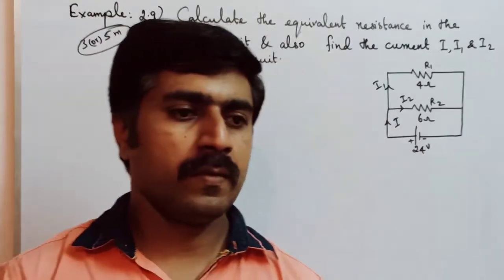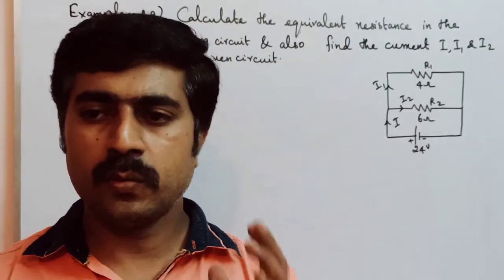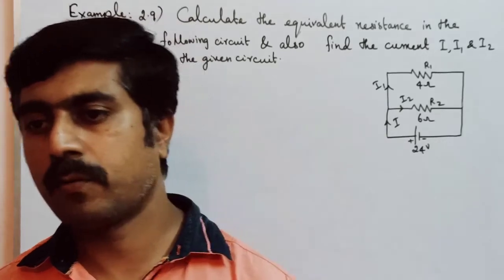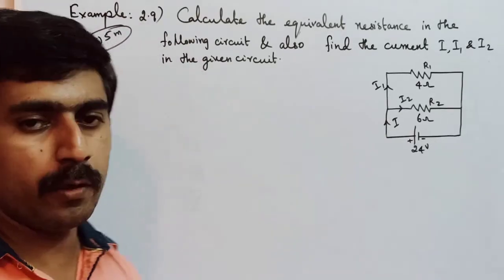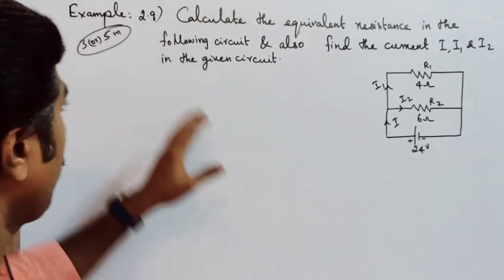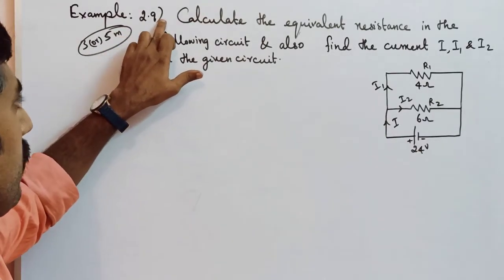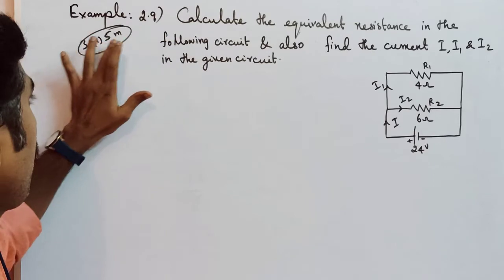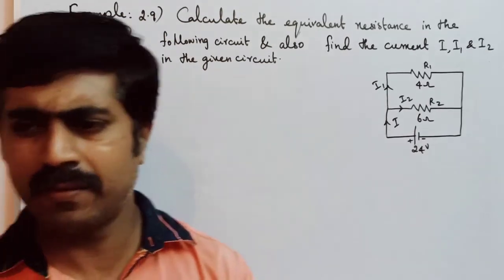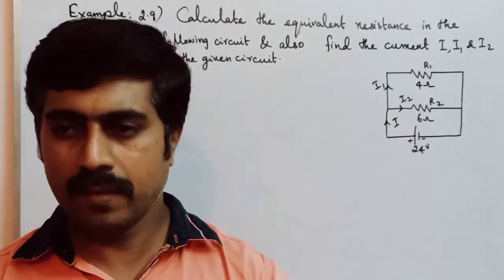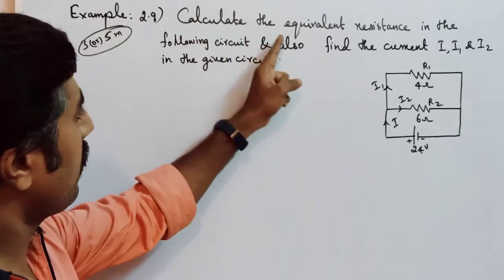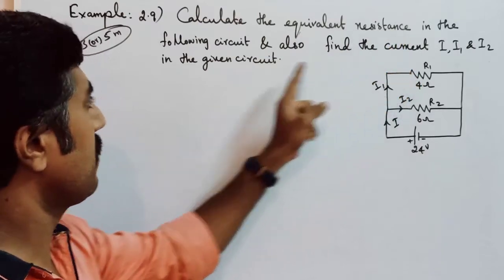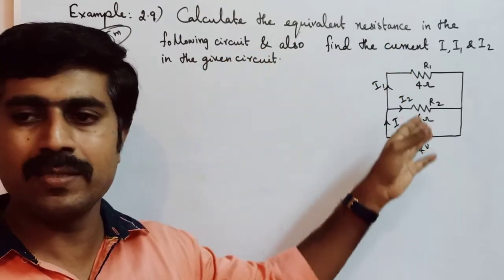Hi students! Today we have a problem in 12th Physics, 2nd lesson. This is a solved problem, the example problem number 2.9. It will be 3 mark or 5 mark, it will be compulsory or choice. My question is: Calculate the equivalent resistance in the following circuit. Once the circuit is given...